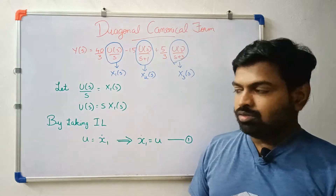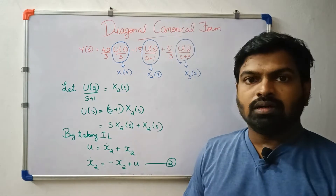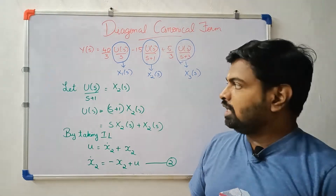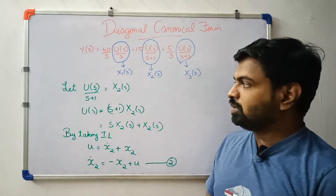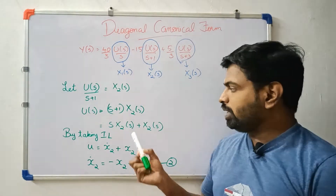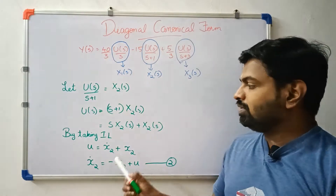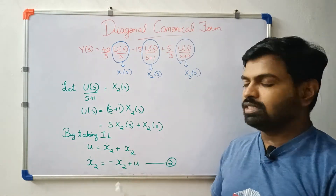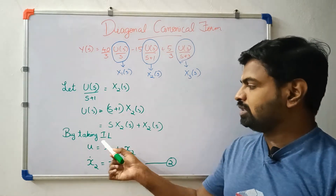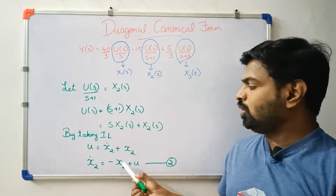We have a state equation. X1 dot is equal to u. The second term: U(s) by (s plus 1) equals X2(s). We apply inverse Laplace. X2 dot is equal to minus x2 plus u. This is the second equation.